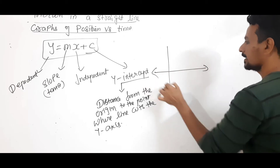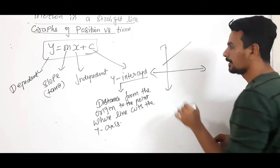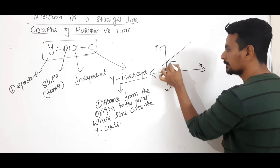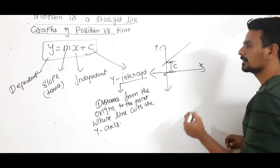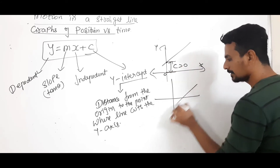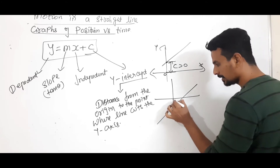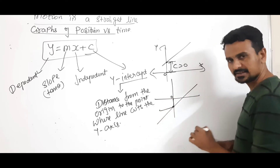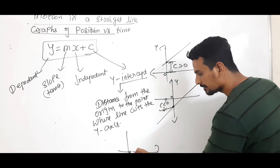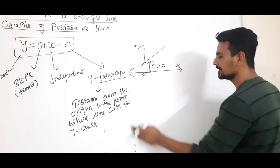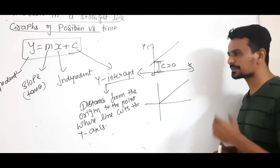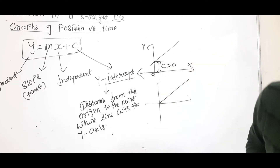If we draw the line cutting the y-axis above the origin, that vertical distance is the intercept — positive in this case since it is in the positive direction. If the line cuts below the origin, the intercept is negative. And if the line passes through the origin, the intercept is zero. So intercept can be positive, negative, or zero.